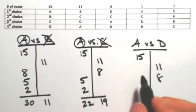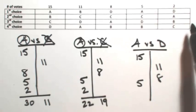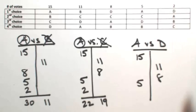In the fourth one, A is over D, so A gets 5. And then in the last column, D is over A, so D gets 2.